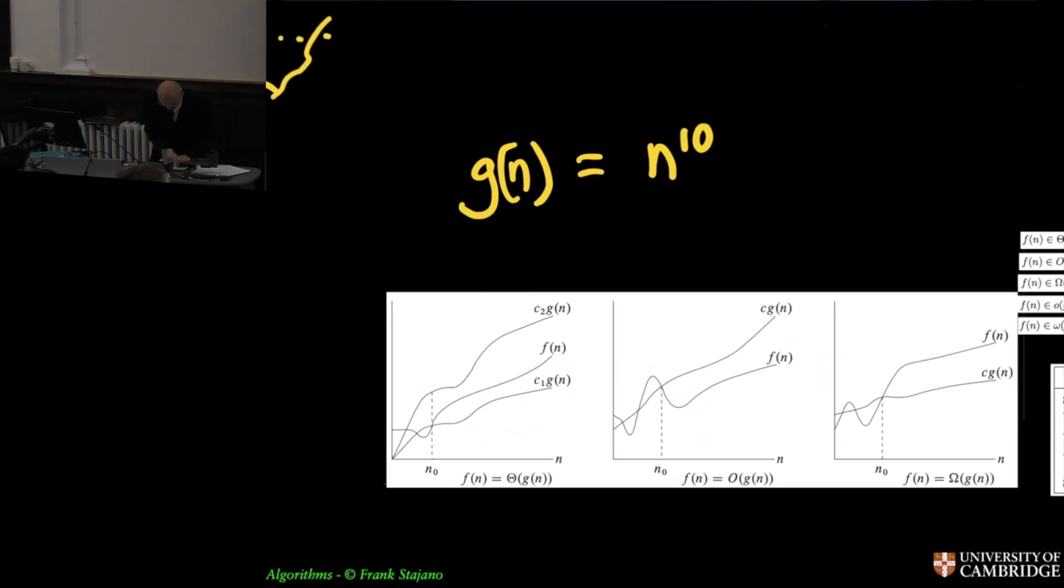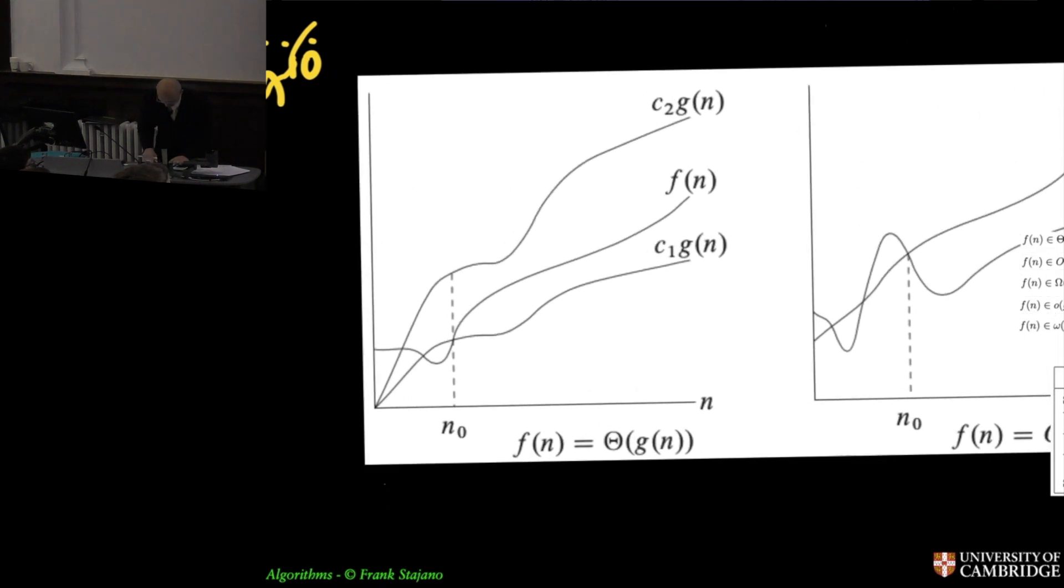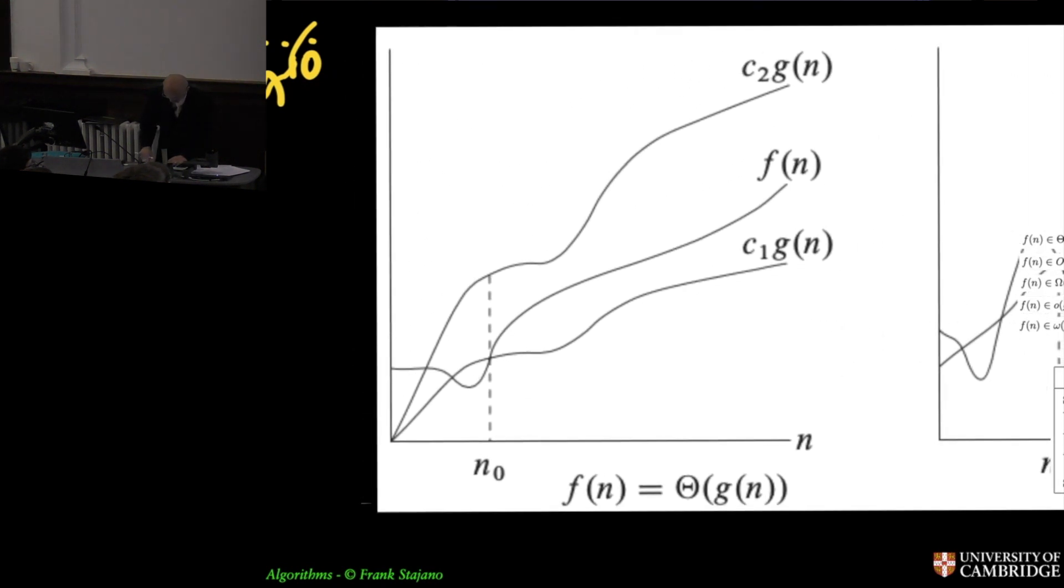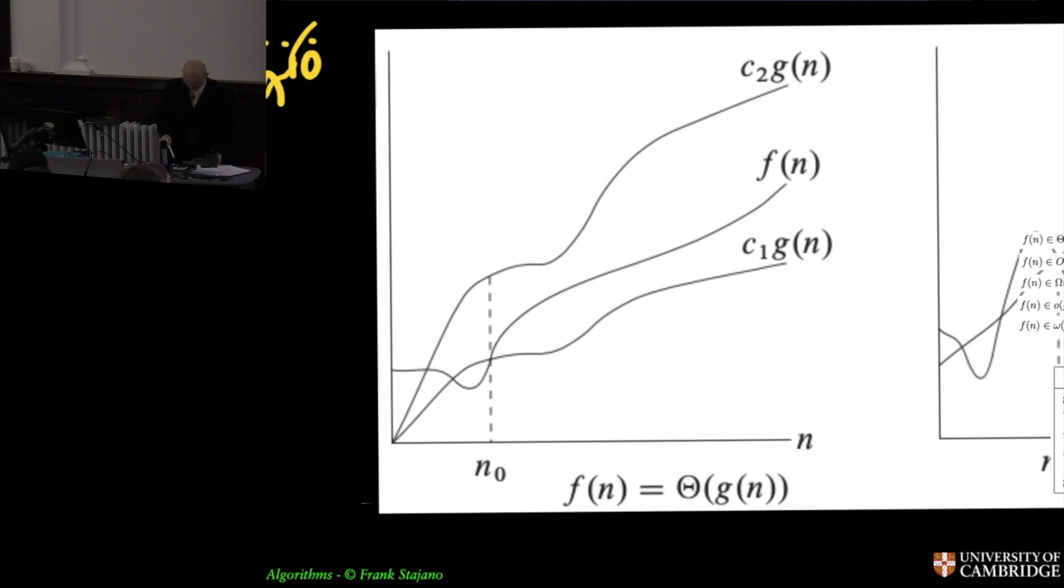This is a picture from your wonderful textbook. So f of n is the squiggly one that may be more complicated than I like, and g of n is the one that should be simpler and easier to write down and smooth. It doesn't look especially smooth here but what I'm doing is I'm sandwiching f of n between two copies of g of n multiplied by two constants c1 and c2.